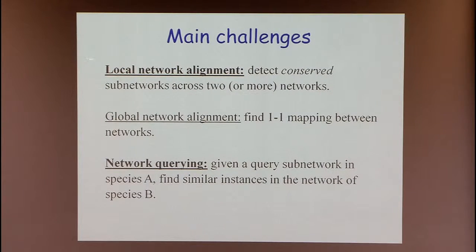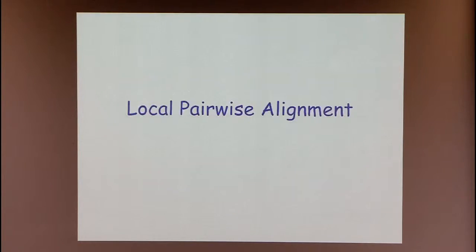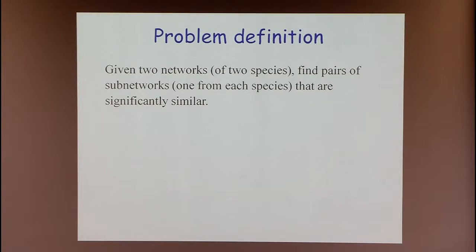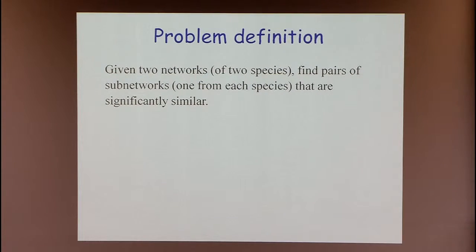Due to time constraints, I'll talk only about local and network querying, and won't cover global network alignment. I'll start with local pairwise alignment, meaning we try to find conserved sub-networks using two species. The problem is: we are given two networks, one for each species, and we try to find pairs of sub-networks, one from each species, that are significantly similar.